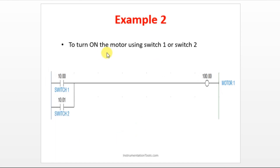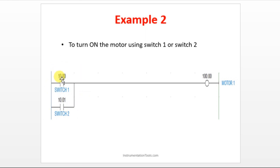Let's see one more example — to turn on a motor using switch 1 or switch 2. I have two options to turn on a motor. When it comes to options, I am using an OR logic: this or this. If you turn on switch 1, motor will be on. Or, if you turn on switch 2, that time also motor will be on. I am using normally open contact for both, because to make a contact, we will mostly be using a normally open contact.